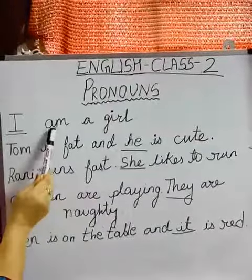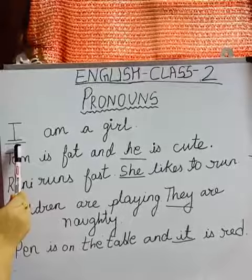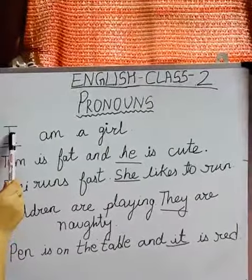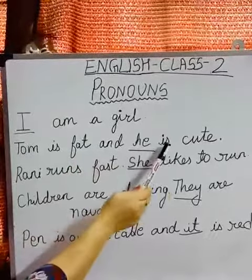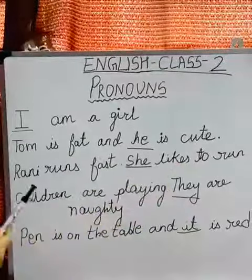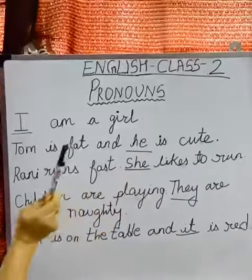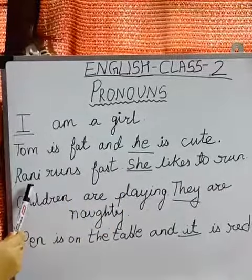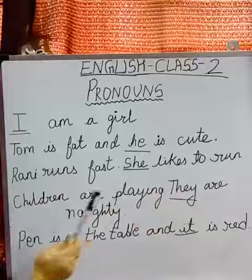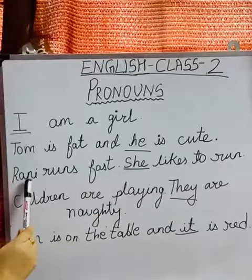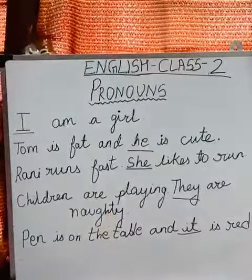I am a girl. So instead of the name we are using 'I'. Tom is fat and he is cute — instead of repeating Tom again we will use 'he'. Rani runs fast. She likes to run. Again, instead of using Rani again here we are using 'she'.